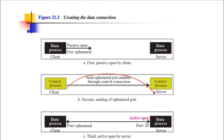The data process on the server issues an active open using port number 20. The data connection uses port number 20, while the control connection uses port number 21. The data connection is activated by the server to the client. This completes the setup of the data connection.